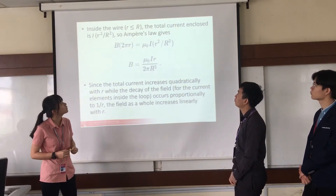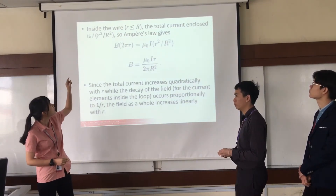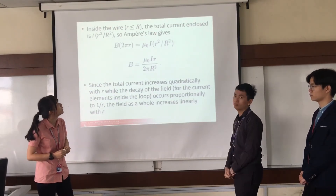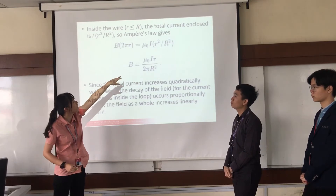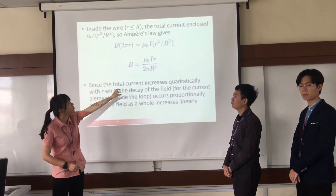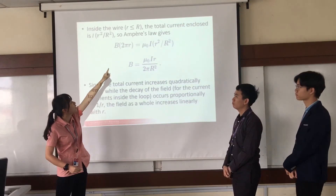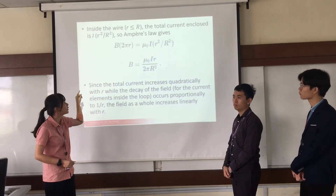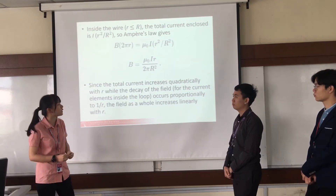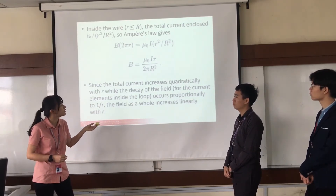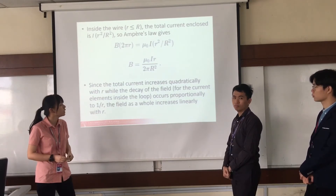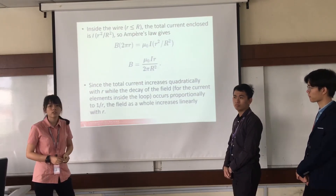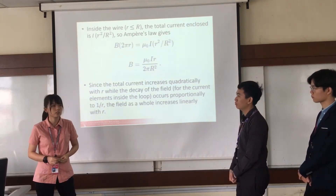Inside the wire, the total current enclosed will be I times r² over R². Substituting this into the formula and simplifying, the r² and r terms cancel, leaving r at the top of the formula. Since the total current increases proportionally with small r while the field decay occurs proportionally to 1/r, the field as a whole increases linearly with r. That's all from me; I will pass the presentation to Sam Wei.